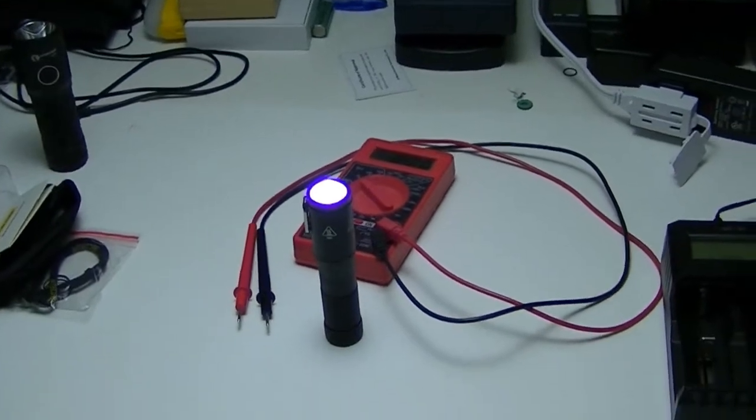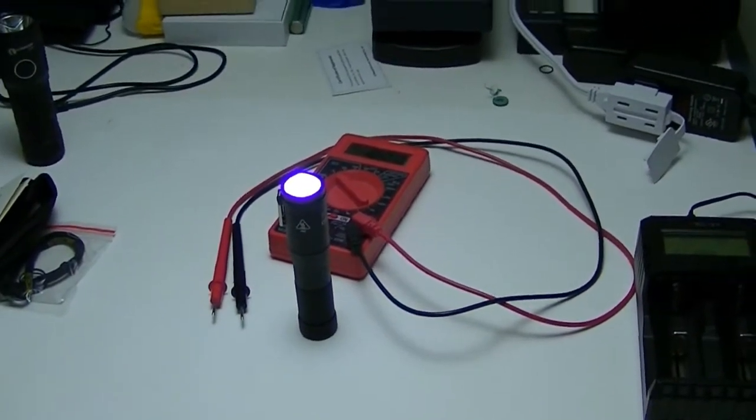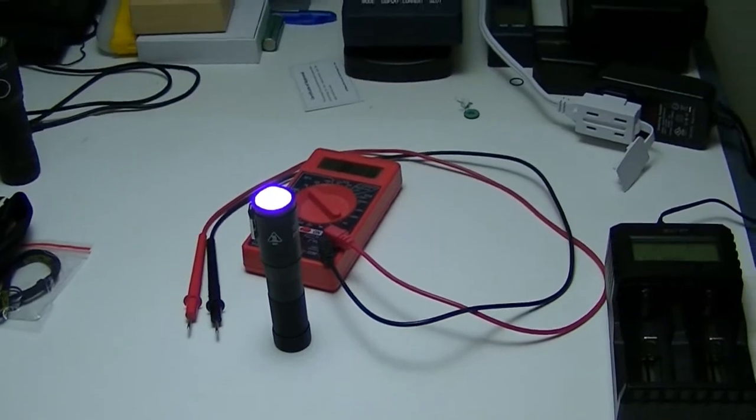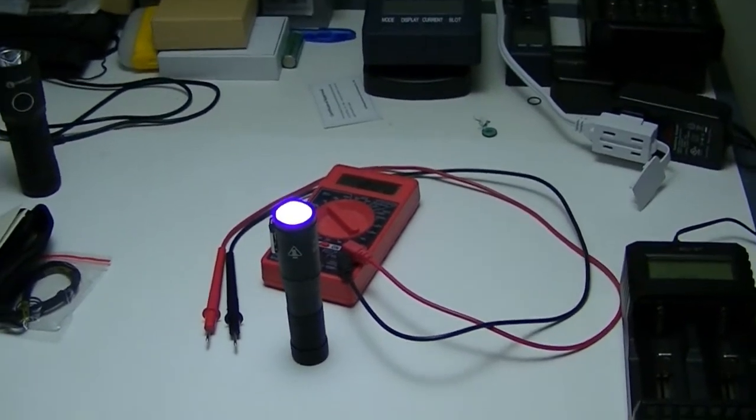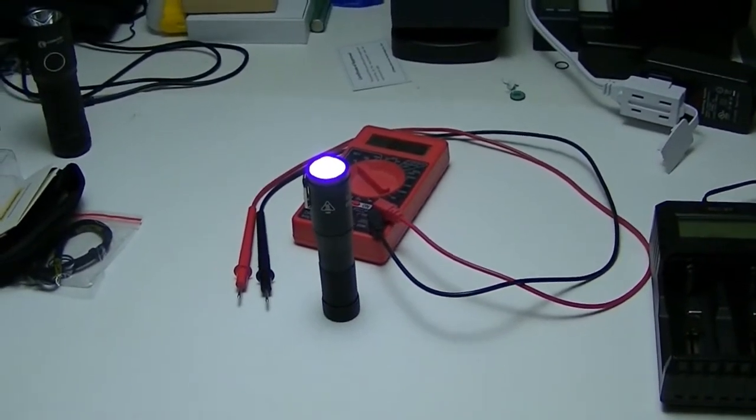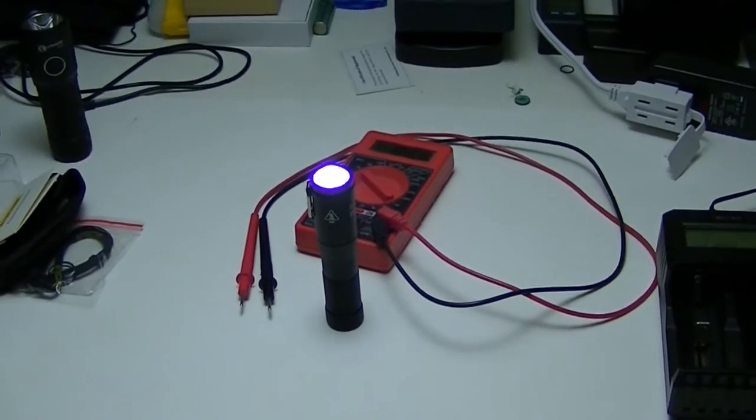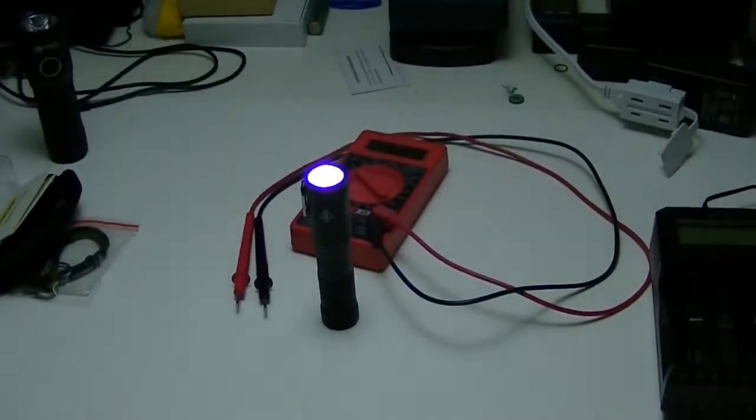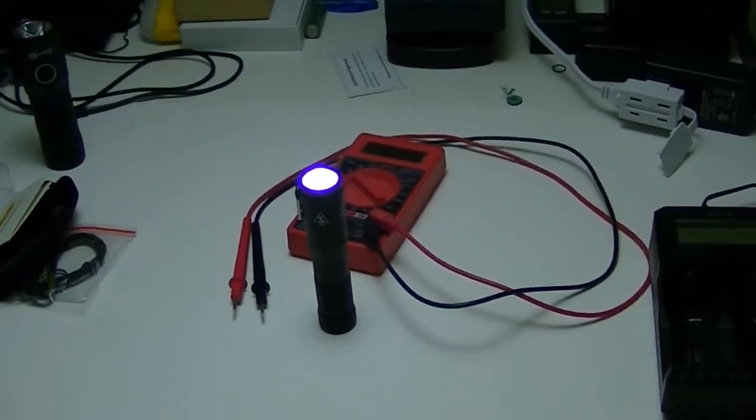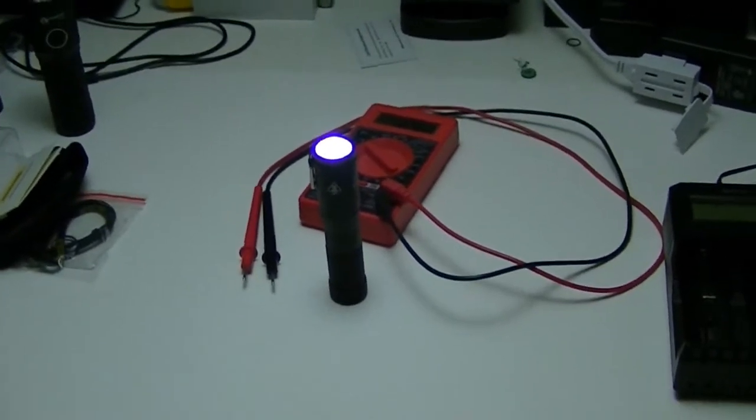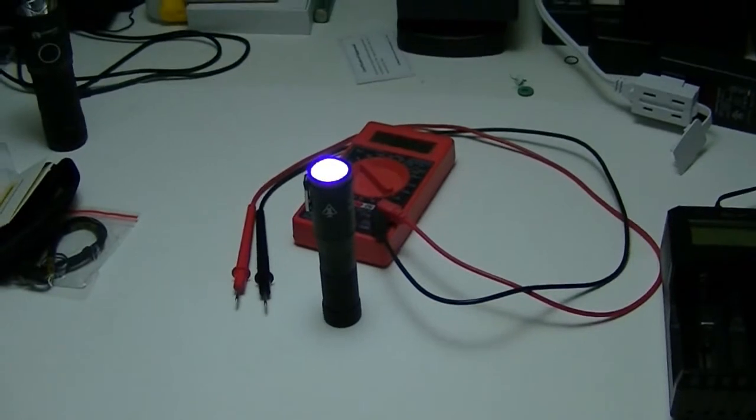The flashlight actually has five modes: it has moonlight, low, medium, high, and turbo. But the battery is not strong enough to provide turbo mode to the light, so it only goes up to high. It goes moonlight, low, medium, high. Now did you notice that?